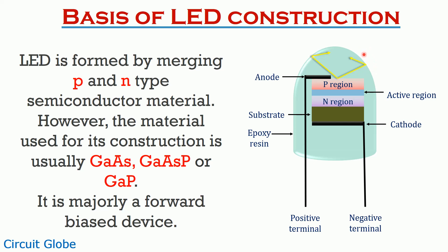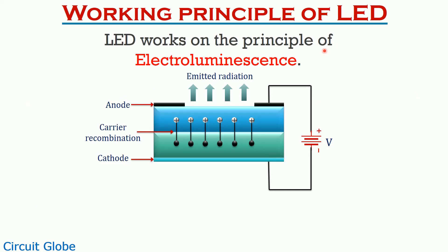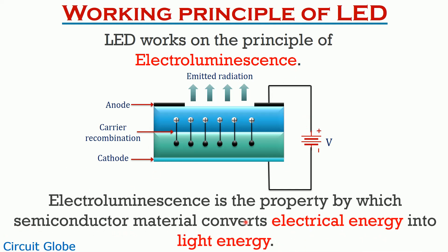Let's now move further and understand the working of light emitting diodes. A light emitting diode works on the principle of electroluminescence. Electroluminescence is the special property of a semiconductor material that converts electrical energy applied to its terminal into its light equivalent form. An LED is a forward biased device, meaning it operates when forward voltage is applied to it. A device is in forward biased condition when the positive potential of the battery is connected to the P side and the negative potential is connected to the N side. So the electrons in the N side get repulsed by the negative terminal of the battery and holes in the P side experience repulsion from the positive potential.